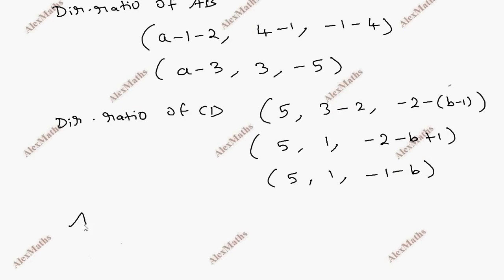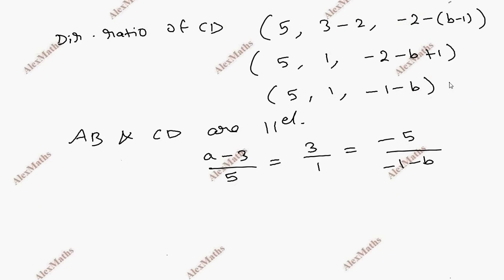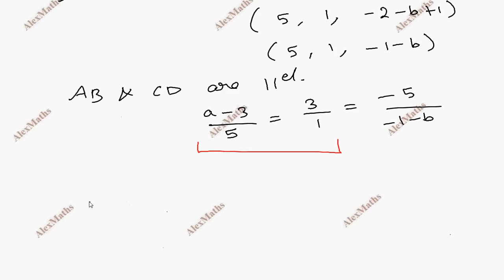Since AB and CD are parallel, their direction ratios are proportional: (a minus 3) over 5 equals 3 over 1 equals minus 5 over (minus 1 minus b). Cross-multiplying: (a minus 3) times 1 equals 5 times 3, which is 15, so the value of A is 18.